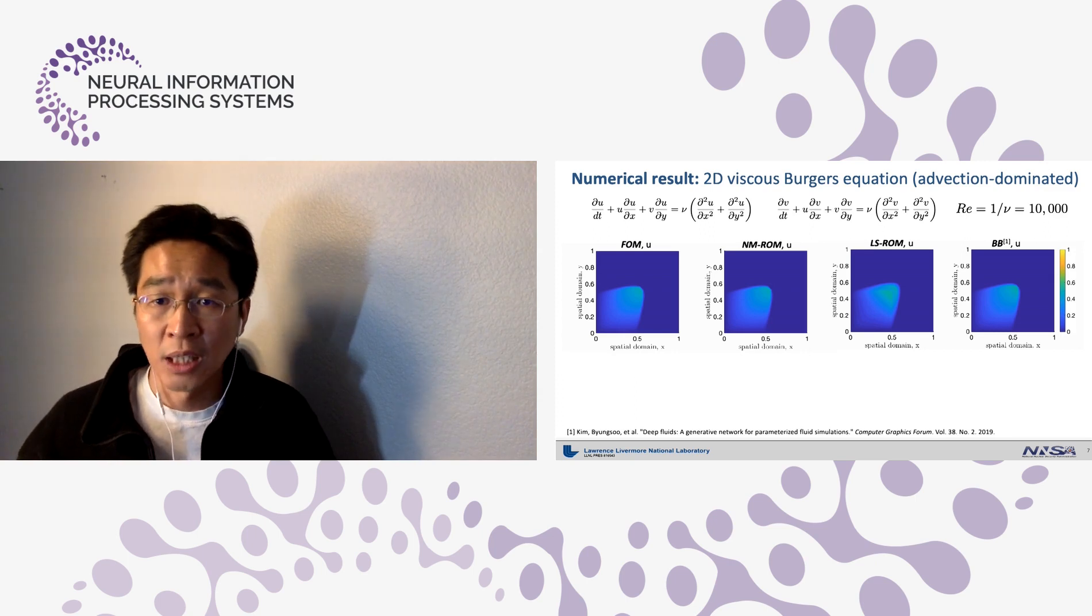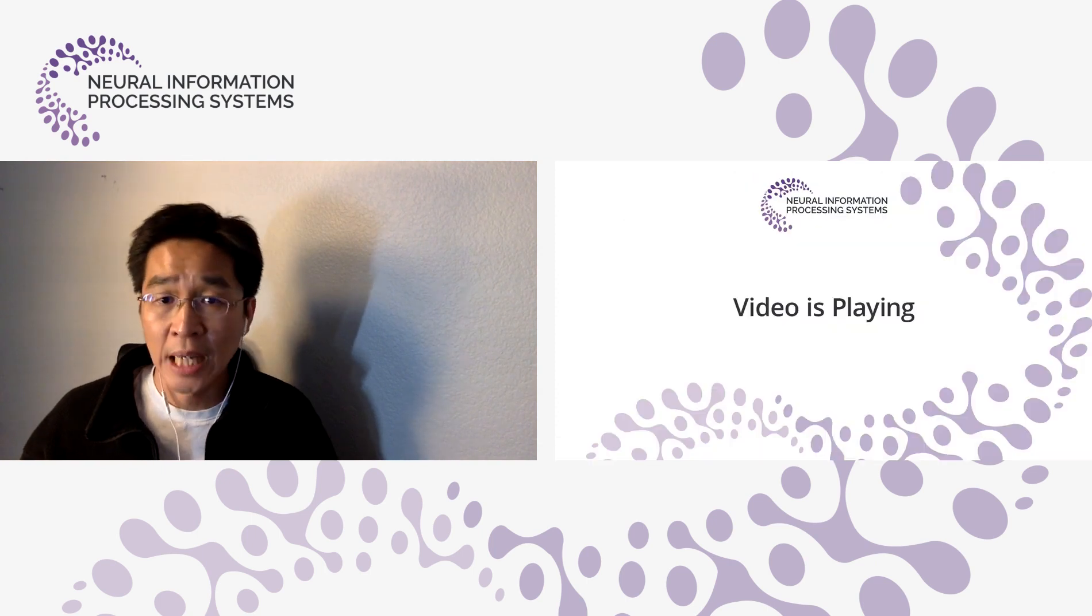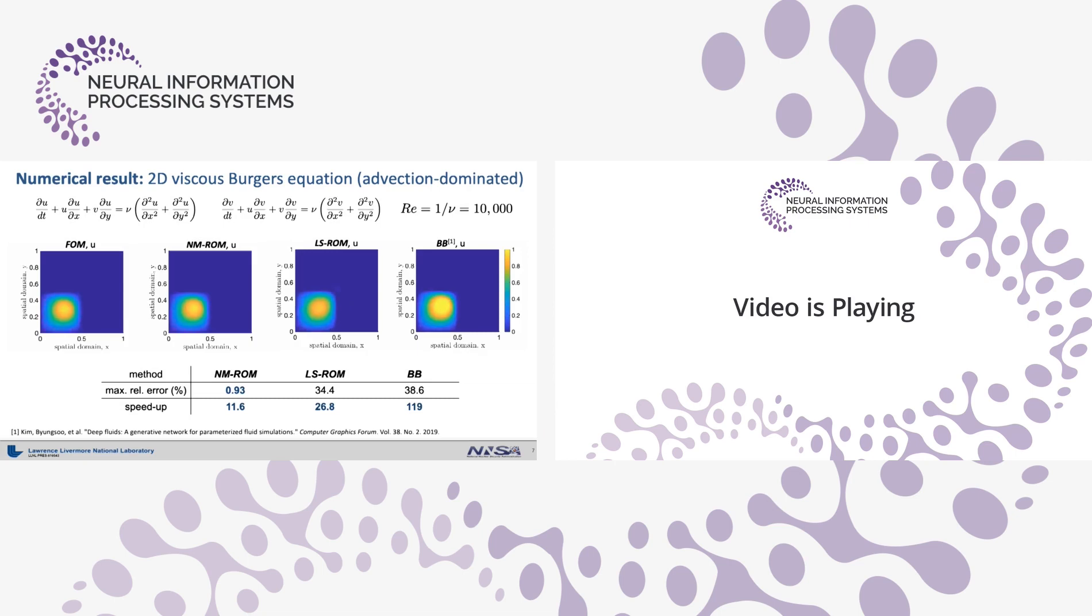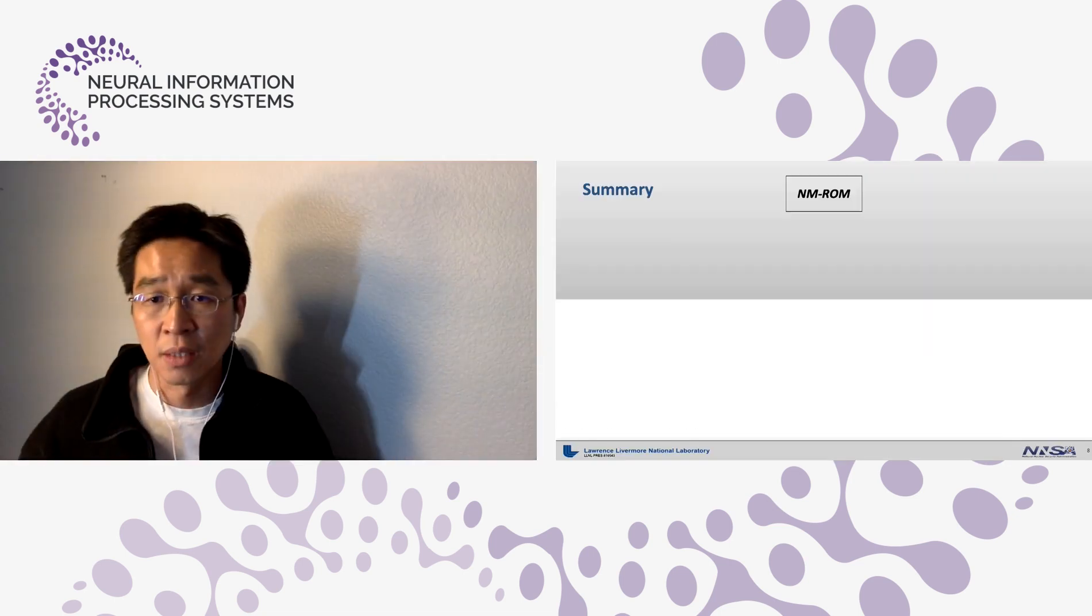However, quantitatively, the BB approach has the worst maximum relative error, that is around 38%. On the other hand, NMROM achieves less than 1% maximum relative error. Furthermore, a considerable speedup is achieved by the NMROM.